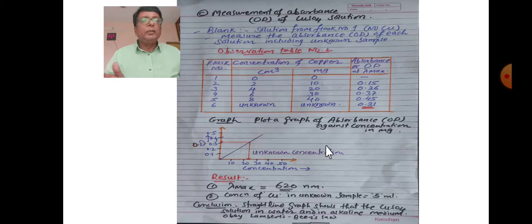Result: Lambda max is 620 nanometers. Concentration of copper in unknown sample is 25 milligrams per 100 ml or 25 mg%.